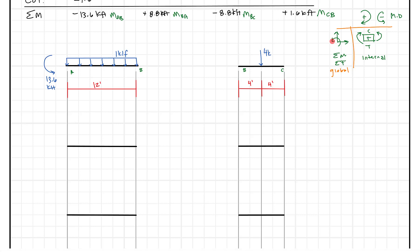A positive is going to be clockwise, so I can write a positive 8.8 kip-feet. On opposite sides of joint B, these are equal and opposite — which is what you should always have at the opposite side of a joint. Equal value, opposite rotation: 8.8. And then at joint C, we're going to have a positive, so this comes back to 1.6 kip-feet.